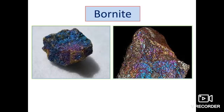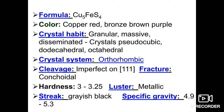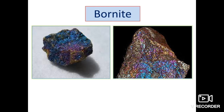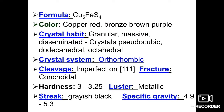Next is bornite. Its color is very important — copper red or bronze brown purple, as you can see in the diagram. The chemical formula is Cu5FeS4. In understanding chemical formulas, you must keep in mind which type of mineral it is — silicate, oxide, carbonate, or sulfide.